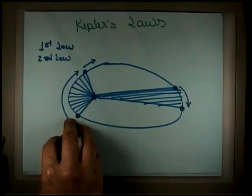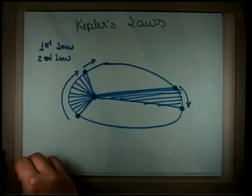So it's the same real estate in both places. The same real estate is covered, but the shape is different. That's Kepler's second law.